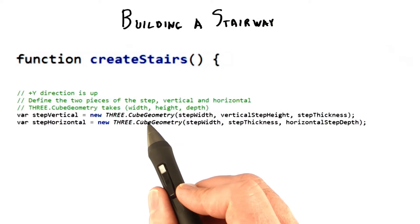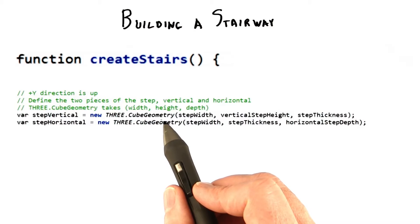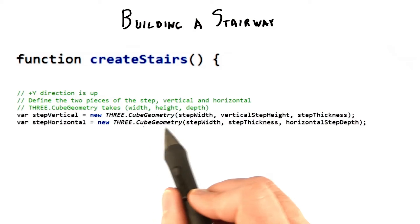We're going to use the cube geometry method to create two pieces for steps: a vertical piece and a horizontal plank. Cube geometry is not a perfect name, since a cube is defined as having all its dimensions be the same size. Box geometry would have been better, but no big deal.